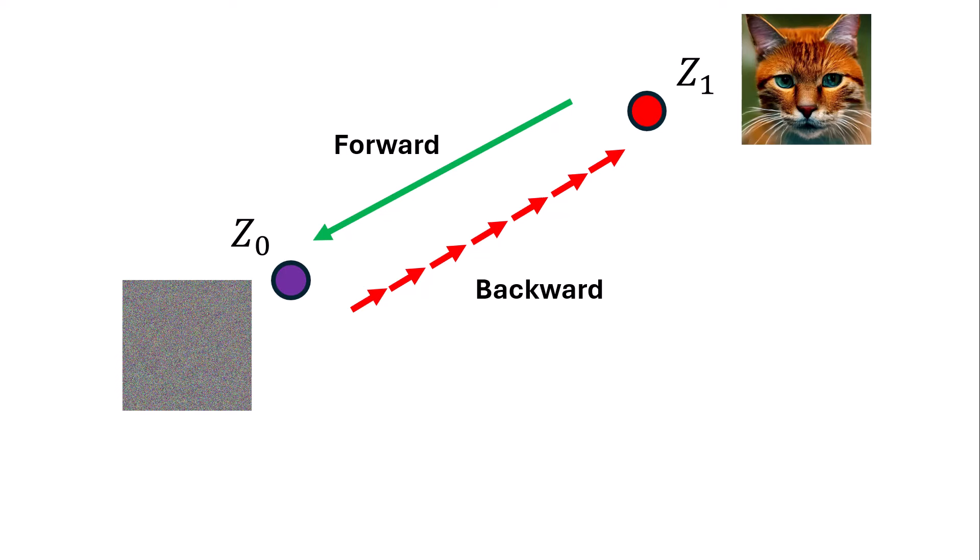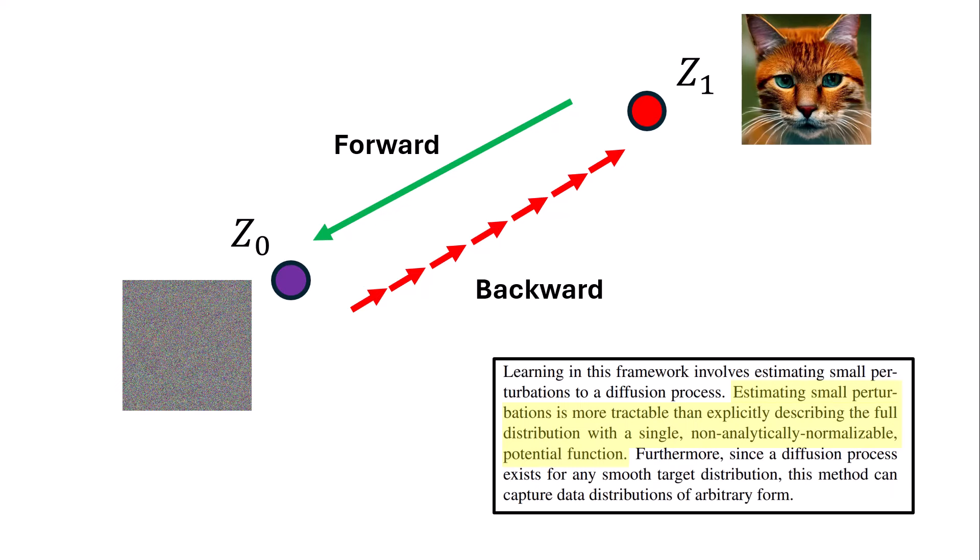I always wondered why we can't do this backward step in a single step. When I was reading the original diffusion model paper from 2015, I came across a paragraph saying: estimating a small perturbation is more tractable than explicitly describing the full distribution with a single non-analytically normalizable potential function. So I was always wondering why it is less tractable to do it in a single step — and this paper tries to answer that.